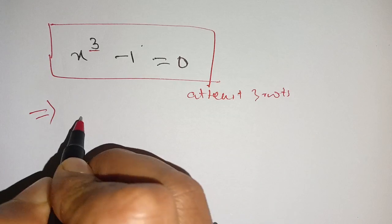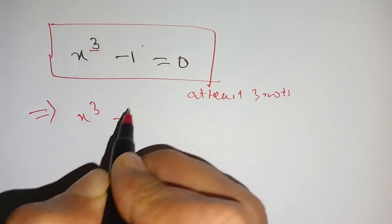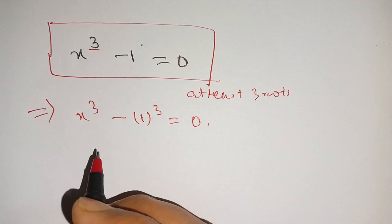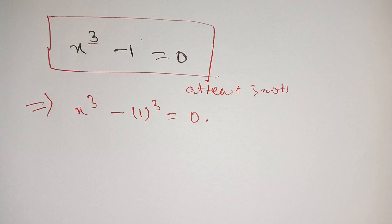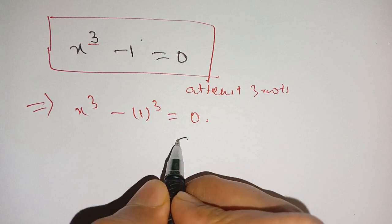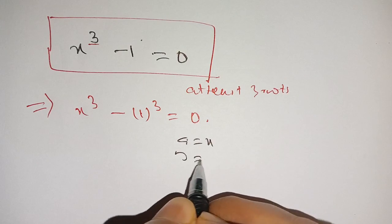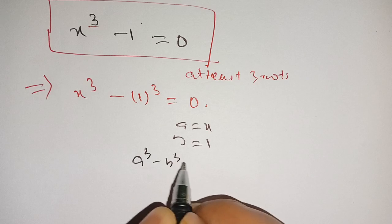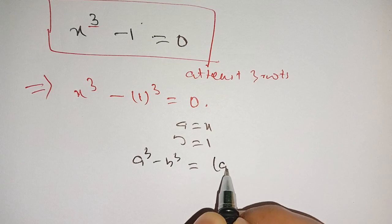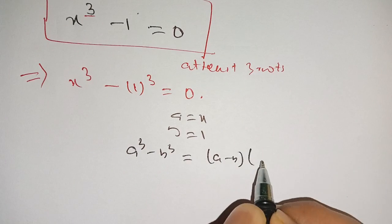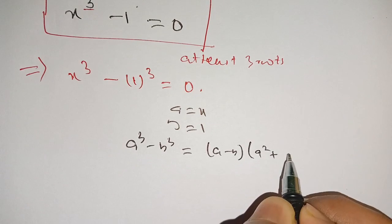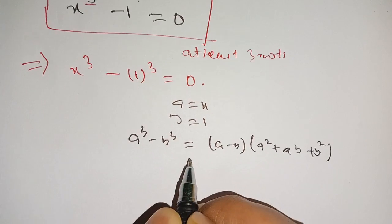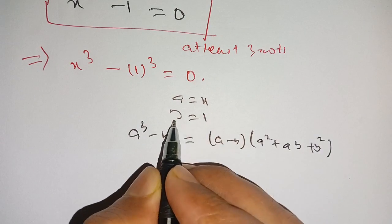We can rewrite this equation as x cubed minus one is equal to zero. Consider that a is equal to x and b is equal to one. We know that a cubed minus b cubed is equal to a minus b, times a squared plus ab plus b squared.